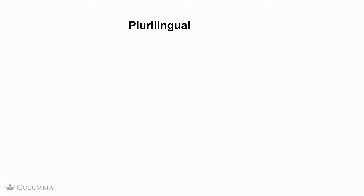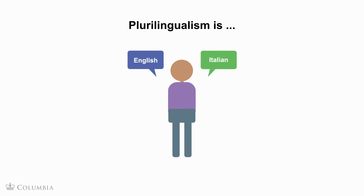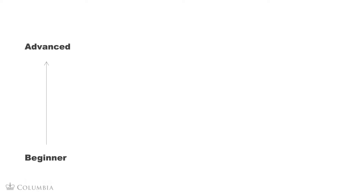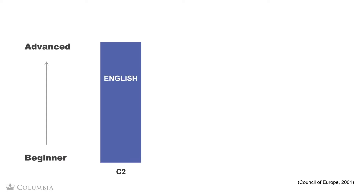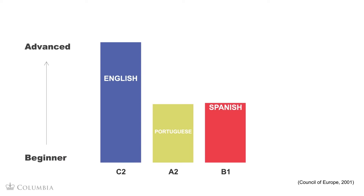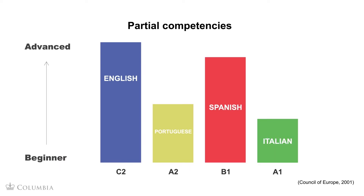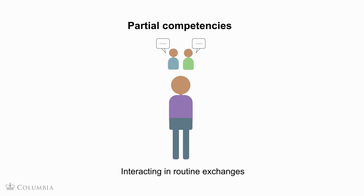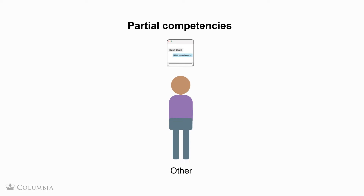So let's keep exploring what plurilingualism is. Plurilinguals decide which language to use with whom and in which situations. However, they may not have or need equal competencies in all of these languages. Language experts in Europe call linguistic competencies that are not fully developed partial competencies. For instance, you may develop a partial competency in a language, like reading, because you only need that language skill to read research papers in your field of study. Or you might focus more on listening and speaking because you need to interact at work in routine exchanges, or for any other reason that does not require you to achieve a high level of language proficiency.